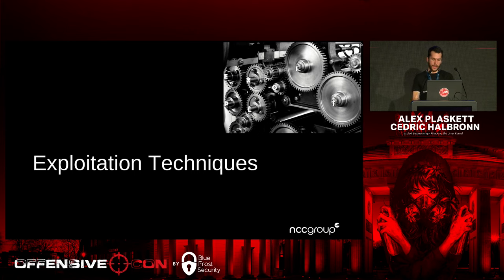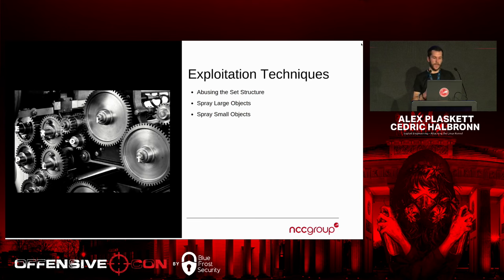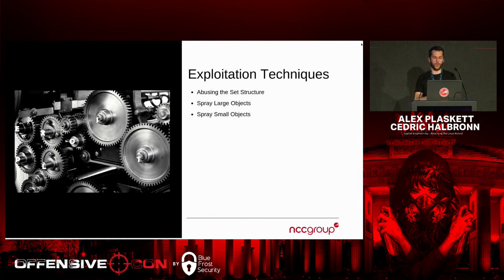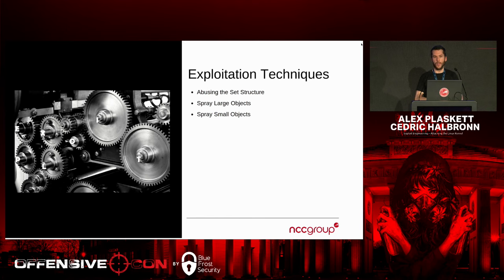Now we know an example of a vulnerability we've exploited, let's talk about the general things we have to deal with for any bug. We want to be able to spray objects to replace the expression, replace large objects because sets in use-after-frees three and four are large objects, and we need to control the content. We're also going to show how we can abuse the set structure, because we chose to use-after-free a set as a good primitive since it turns out to be quite powerful.